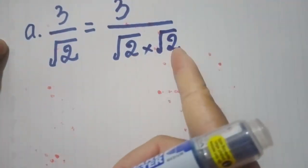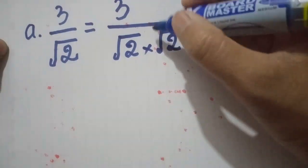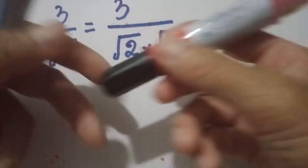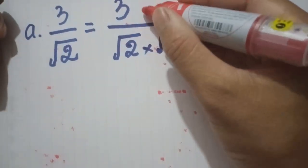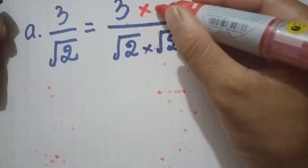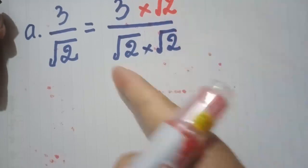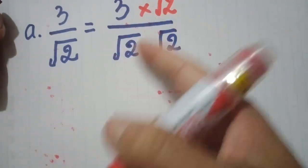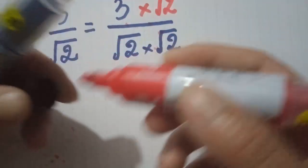On the numerator we multiply by radical 2, so we get 3 times radical 2. On the denominator we also multiply by radical 2. So we can simplify.